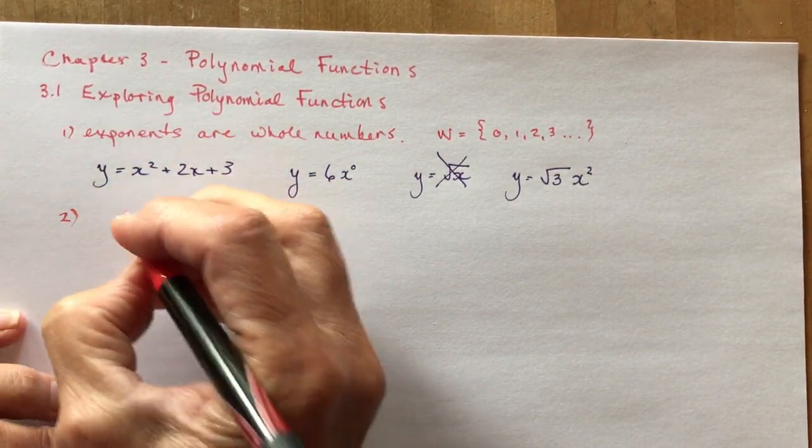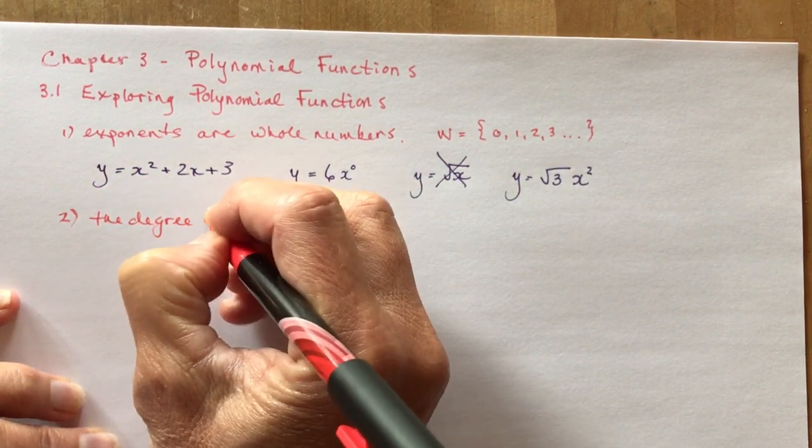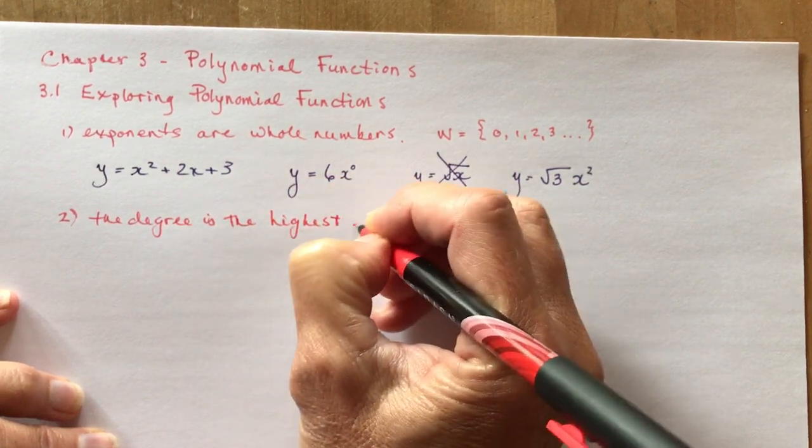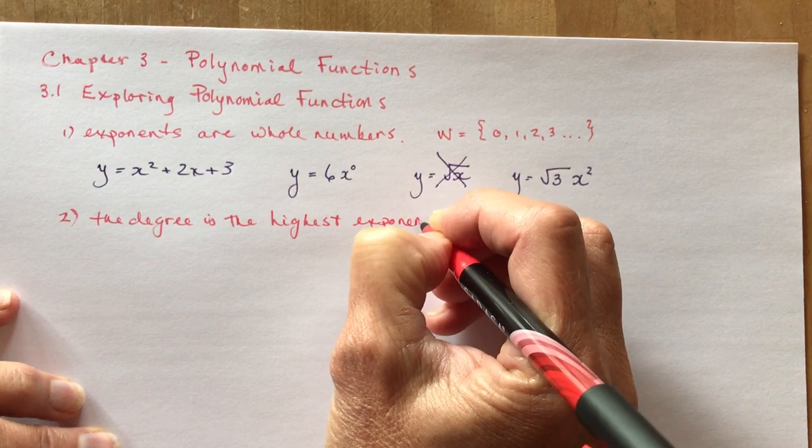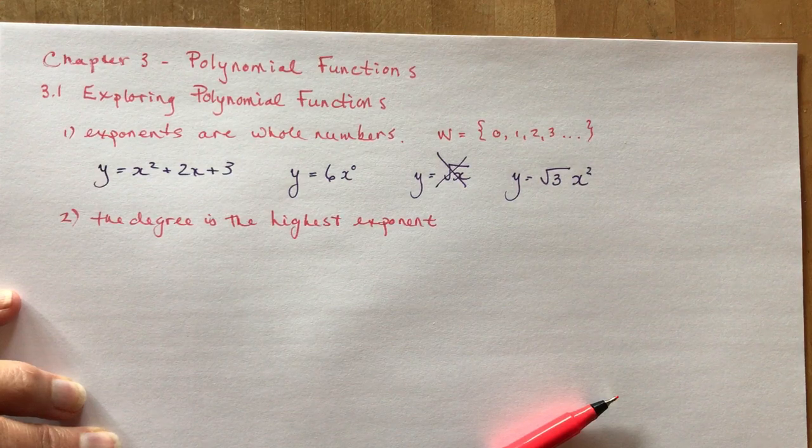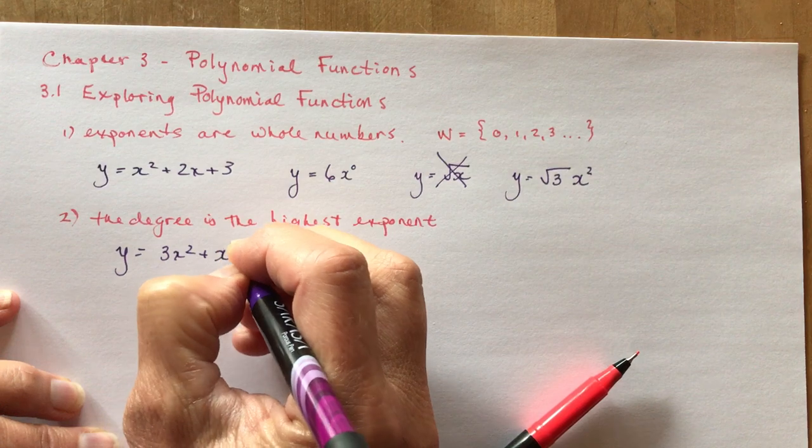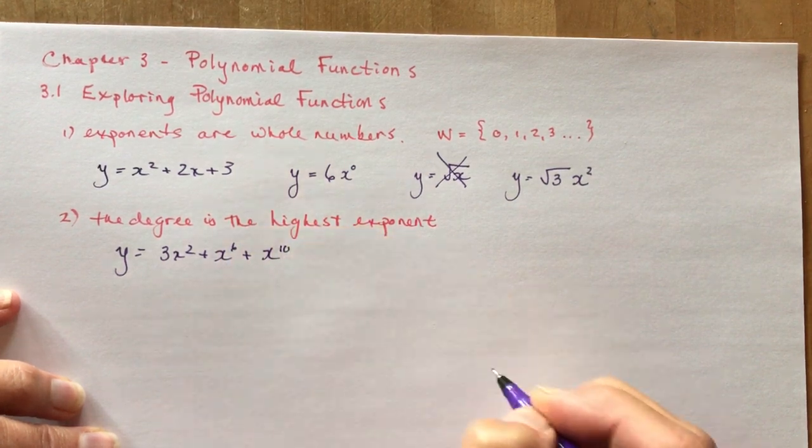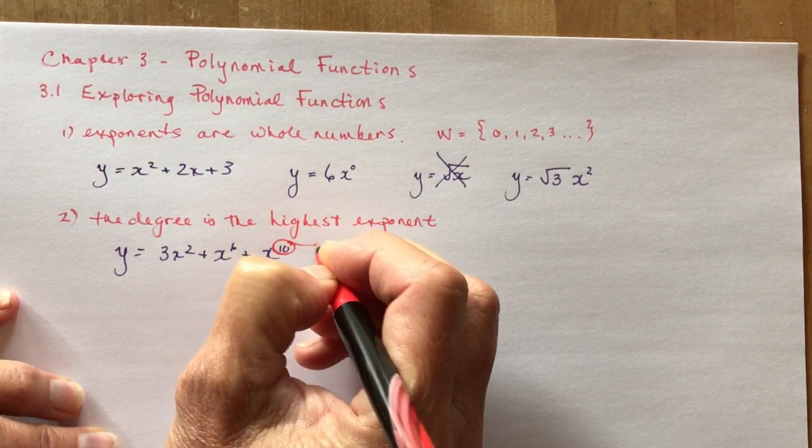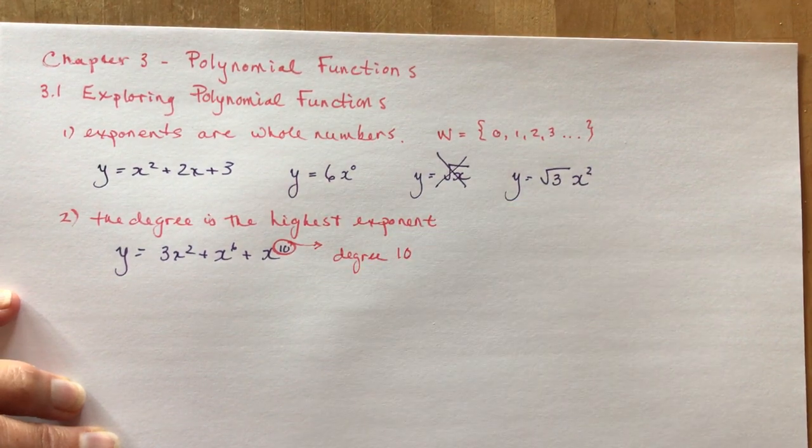The second thing you need to know is the degree. When we talk about the degree of the polynomial function, the degree is the highest exponent in the expression. So if I had y equals 3x squared plus x to the 6 plus x to the 10th, the degree would be 10. All you have to do is find the biggest number, degree of 10.